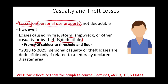Now bear in mind, between 2018 and 2025, personal casualty or theft losses are deductible only if related to a federally declared disaster area. So if you lost a car in a federally declared disaster area, then it is deductible. If not, those losses are not deductible.